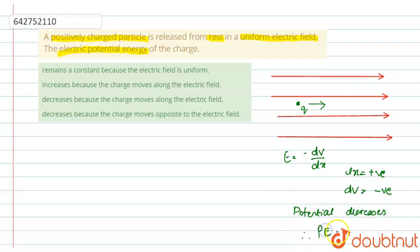Therefore, the potential energy decreases. And hence, the electrical potential energy of the charge decreases because the charge moves along the electric field is the correct answer.